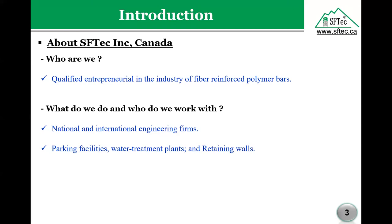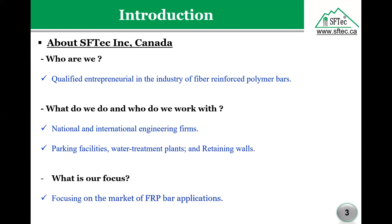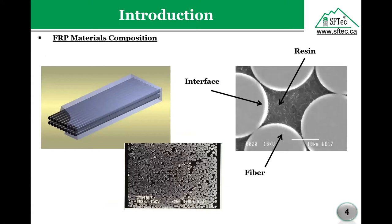We focus our energy on parking facilities, water treatment plants, and retaining walls. Our focus is primarily on GFRP bar applications, though we also have products like sheets and AR mix for concrete. FRP material composition is simple — it's basically fiber and resin, which is a polymer, with an interface between them, joined together through a process of pultrusion. What you're seeing here is a microscopic view of an FRP bar.